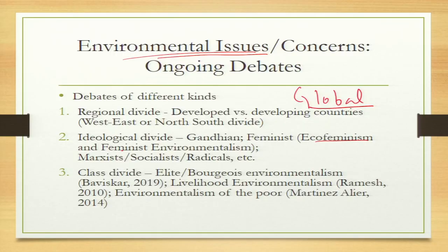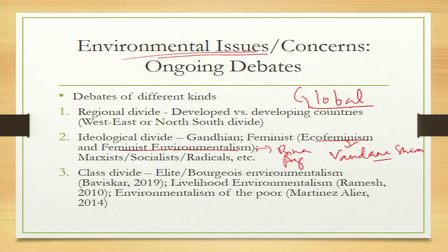Gandhi always stressed on using less and less — a decentralized approach to environment where minimum consumption is the key. You can save the planet only if everyone is equally concerned about using it to the least — no misuse of nature and natural resources. Coming to feminism, the feminist view is that women are prone to be closer to nature and have a tendency to conserve it. Two key thinkers are Vandana Shiva, who talks about eco-feminism, and Bina Agrawal, who talks about feminist environmentalism.